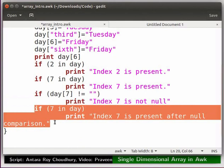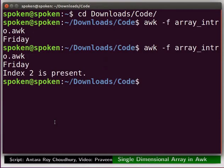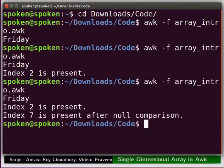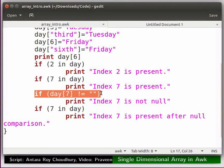Next, we have changed the print statement of the condition 7 in day. Save the code. Let's see what happens when we execute the code. Switch to the terminal, press the up arrow key to get the previously executed command, and press enter to execute. We got an unexpected output. The statement index 7 is present after null comparison is printed. How is it possible? When we write day of 7 not equal to null, we are trying to access the element at index 7.